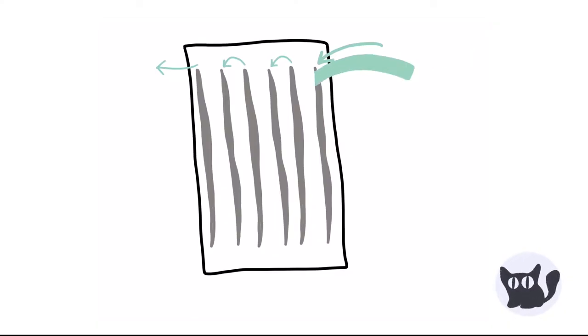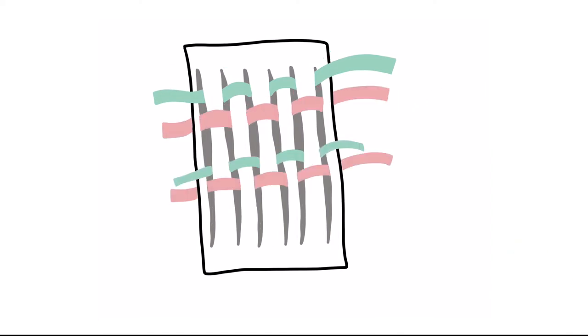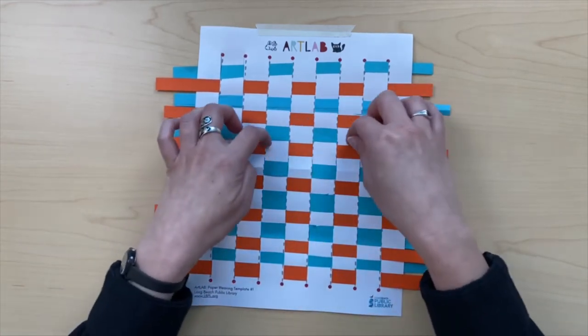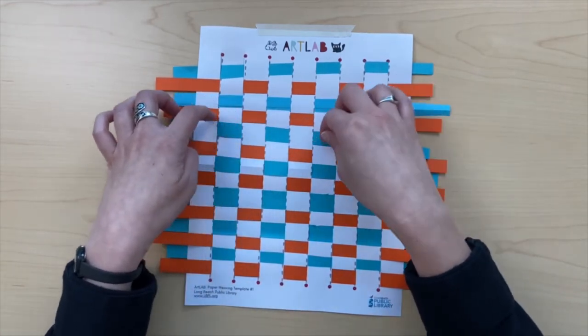Repeat this, alternating each row. Over, then under, the next row will be under, then over. As you weave more rows in, push your strips together. This will make sure your weave is tight and your paper doesn't move around.